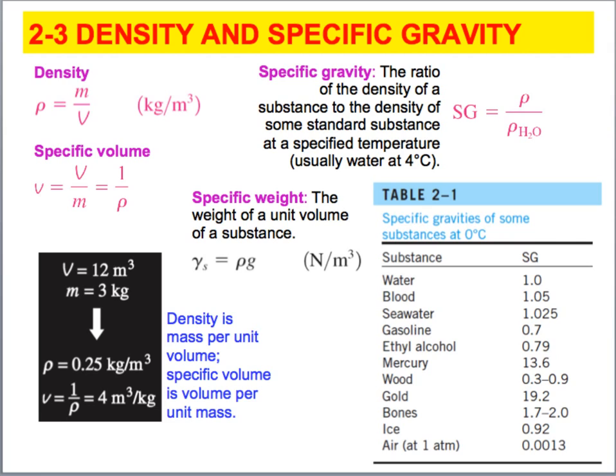Let me define some other properties that we use to describe a fluid state, and in many cases, a solid state too. Density. So density is going to give us the mass of an object per unit volume. The mass or the density of water is approximately 1000 kilograms per meter cubed.